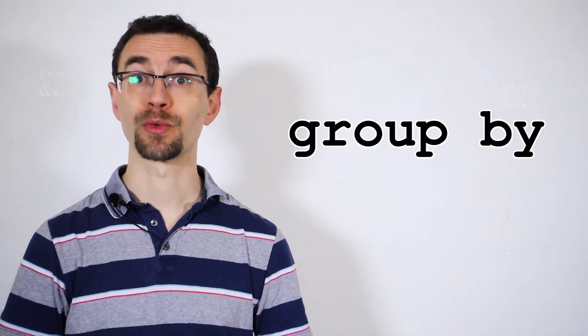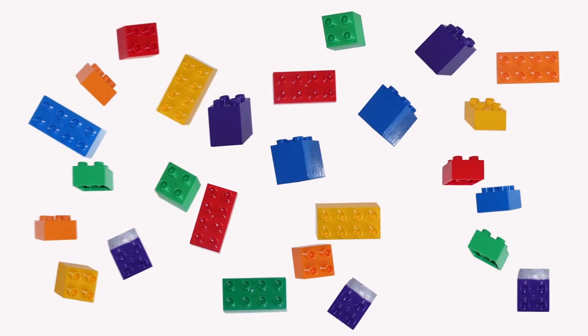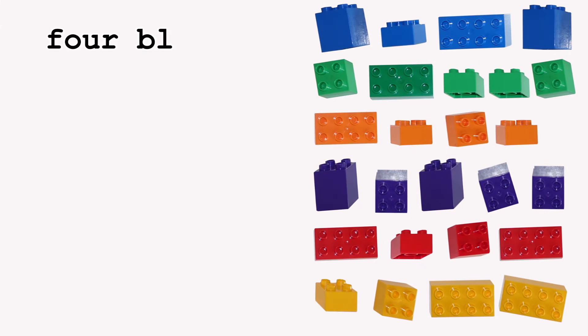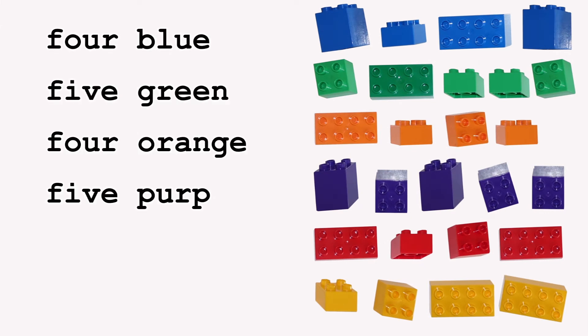You can get the totals in a single query using group by. This splits up the results according to the values in the group by column. You'll get a row in your output for each different value in it. So a count group by color will give you the number of different bricks of each.